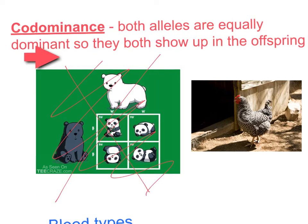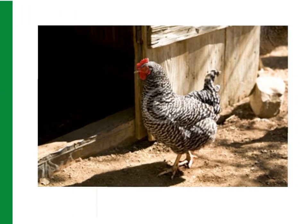However, this is how checkered chickens come about. This chicken had one parent that was black, one parent that was white, and the result is not a blending like in incomplete dominance, but rather spots or checkers.